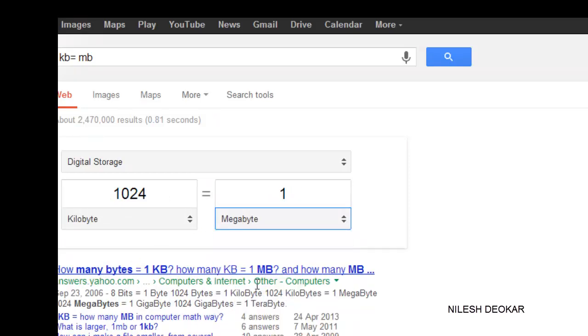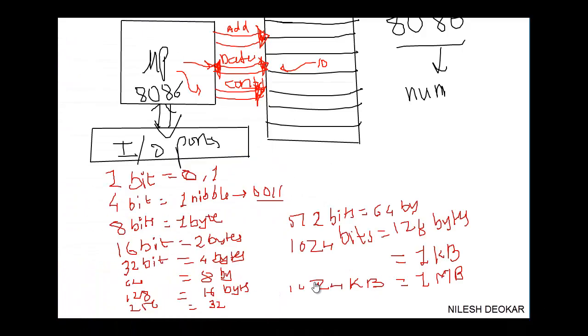We will check 1024 KB equals to 1 MB, and we derived it from 1 bit to 1 MB.